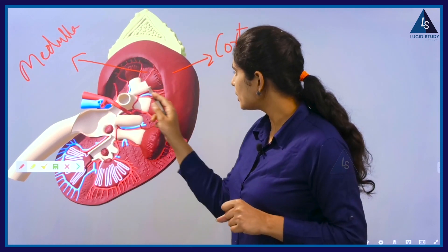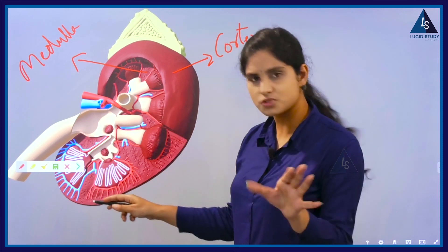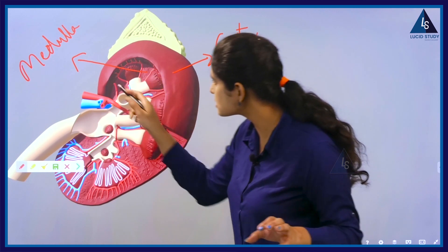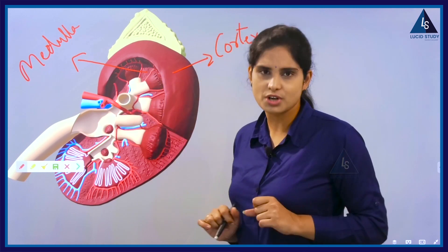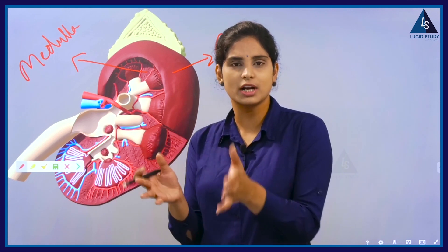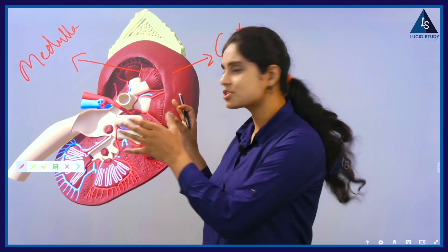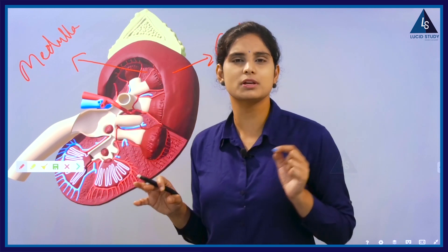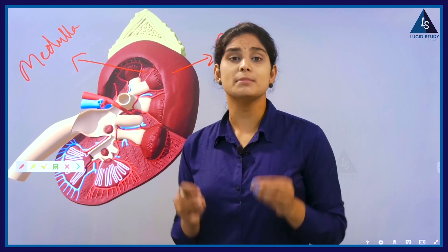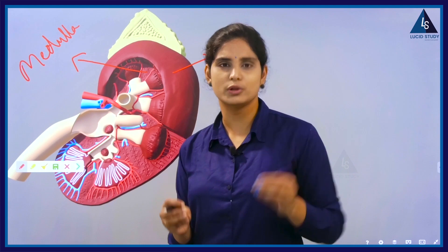Moreover, you can see some cone-shaped structures — about 7 of them. These are structures which contain millions of microscopic units. These microscopic units are called nephrons. We call them nephrons.